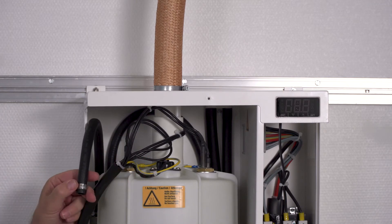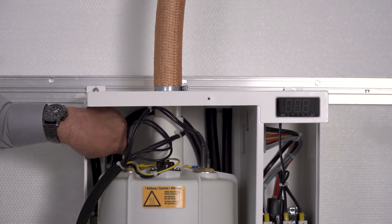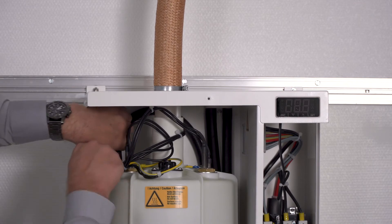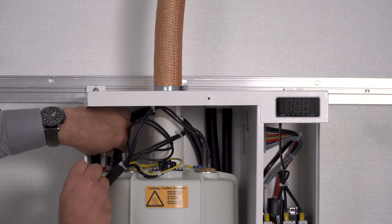Then I screw the hose of the water level control back onto the nozzle of the steam cylinder on top and screw the hose clamp tight again.